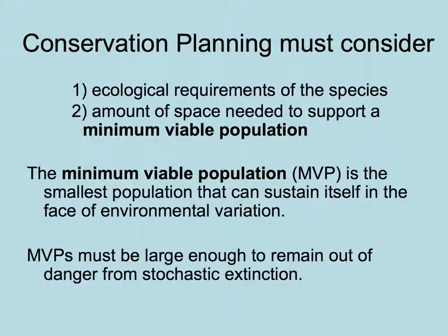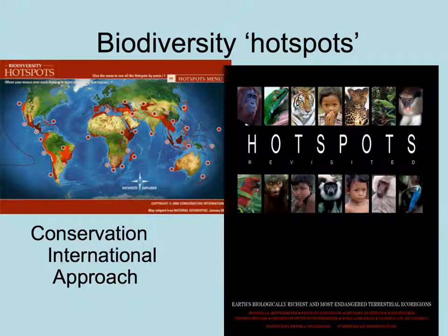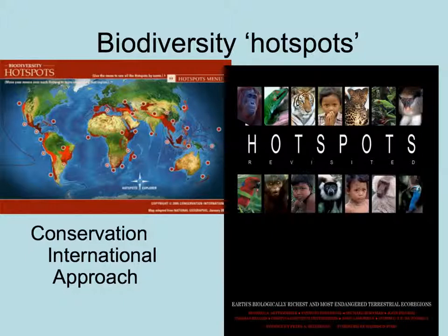Is it more important to focus on conserving charismatic species or their habitats? Many conservation efforts have been focused on particular species, but there are pros and cons to this versus a habitat or ecosystem approach. Conservation International's approach has been to identify biodiversity hotspots around the world — places with large species diversity, unique endemic species, but also under a lot of developmental pressure from humans.